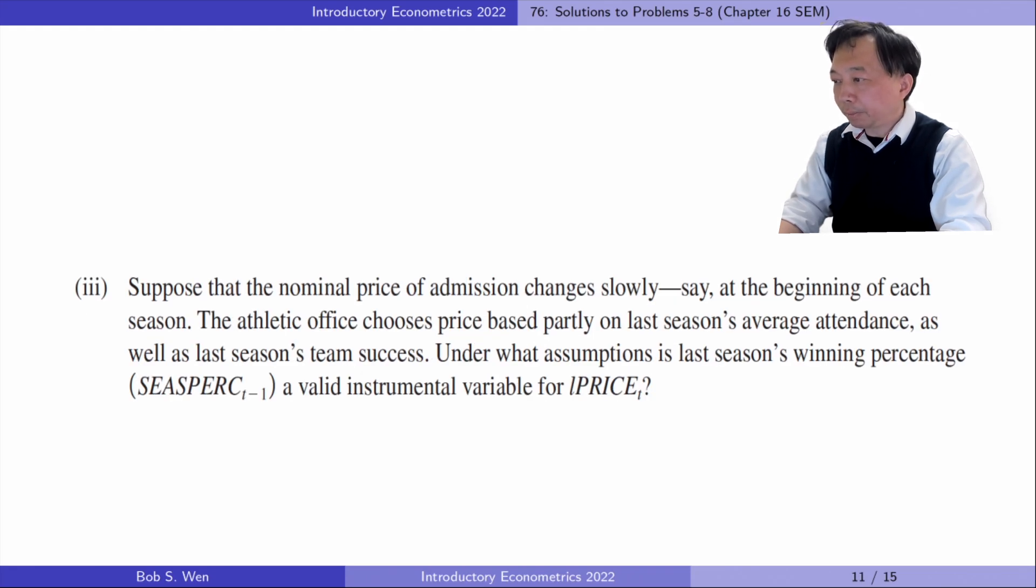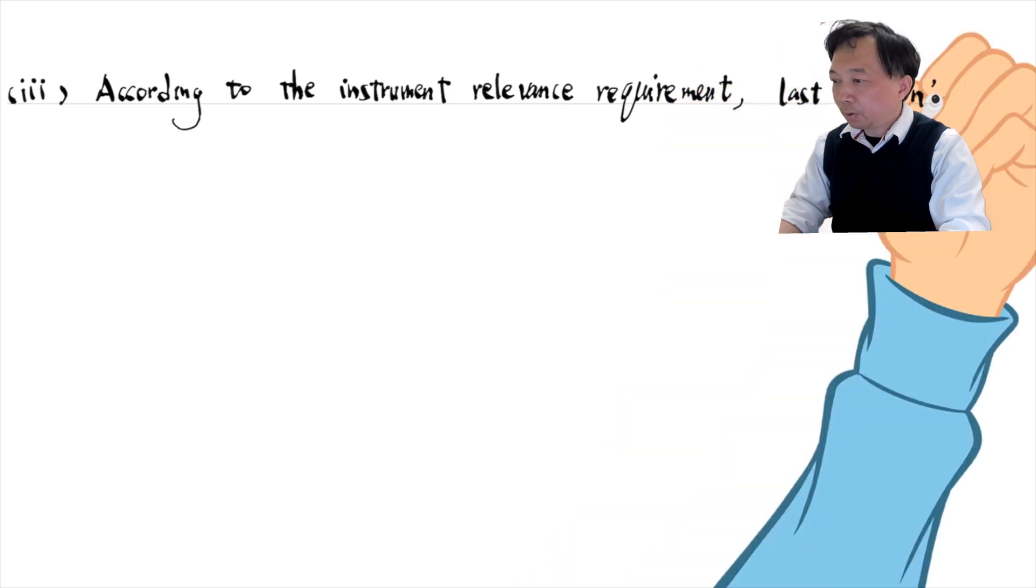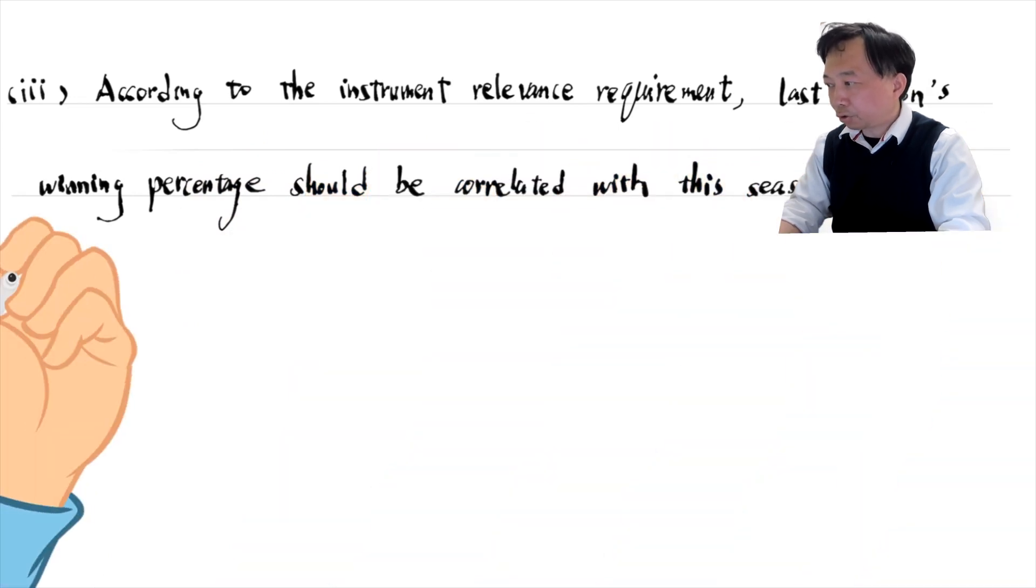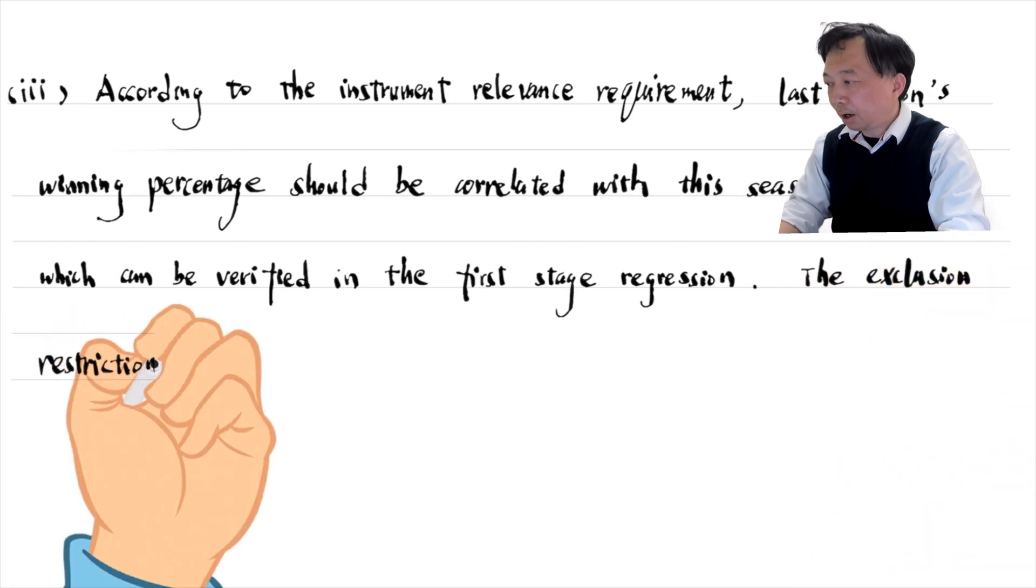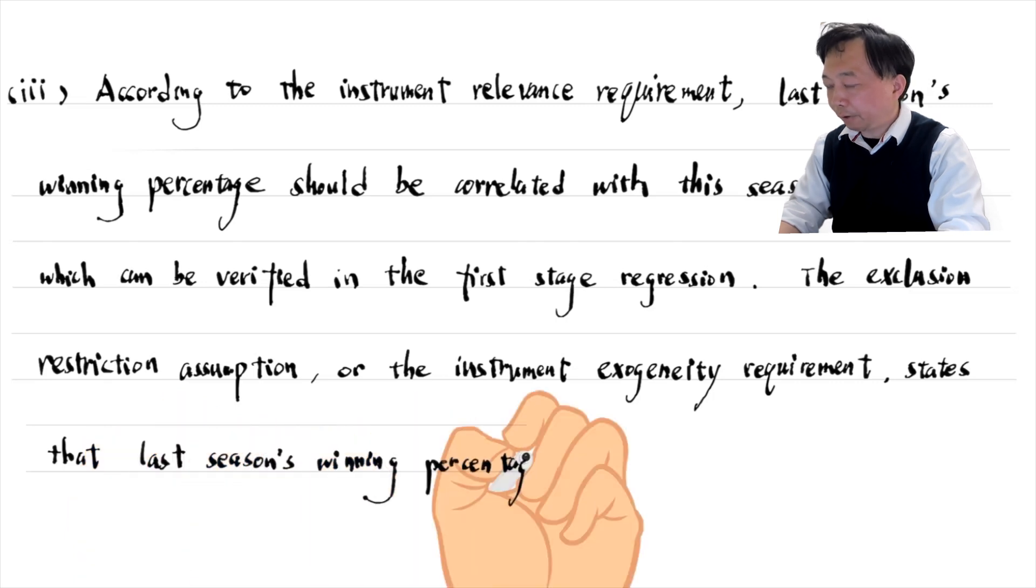In part three, suppose that the nominal price of admission changes slowly, say at the beginning of each season. The athletic office chooses price based partly on last season's average attendance as well as last season's team success. Under what assumption is last season's winning percentage a valid instrumental variable for this season's price? According to the instrument relevance requirement, last season's winning percentage should be correlated with this season's price, which can be verified in the first stage regression. The exclusion restriction assumption or the instrument exogeneity requirement states that last season's winning percentage should not be correlated with the current error term mu or directly affect this season's attendance.